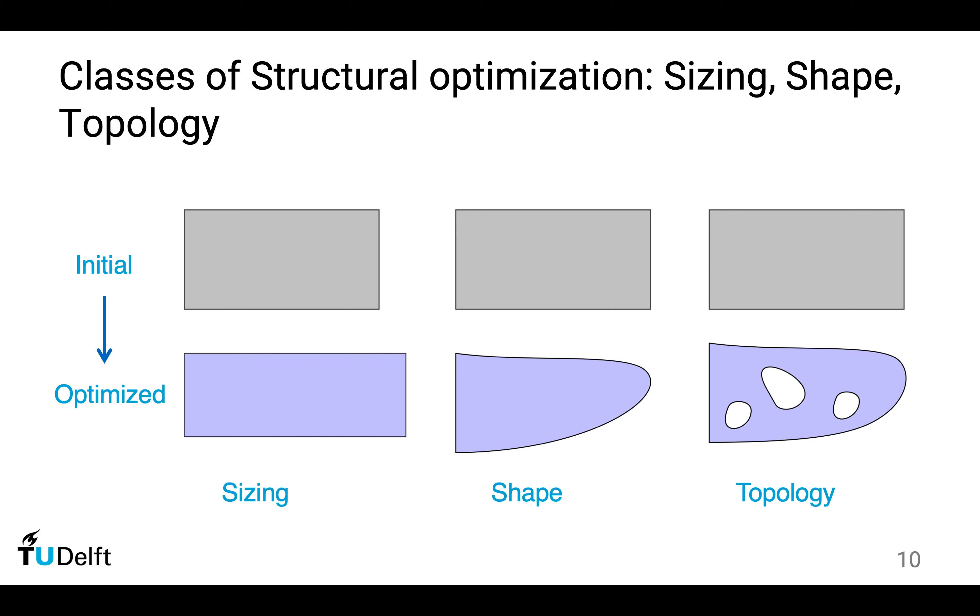About topology optimization, we would like to distinguish other optimization classes. Normally, we distinguish between sizing, shape optimization, and topology optimization.